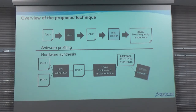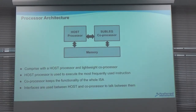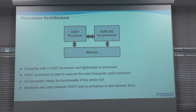So we are able to take any application and generate a customizable processor only for that application. In this framework we use a generic processor architecture where we have a host processor on the left-hand side and a sublet coprocessor. There are several interfaces between the processor and memory to transfer data among different modules of the architecture.